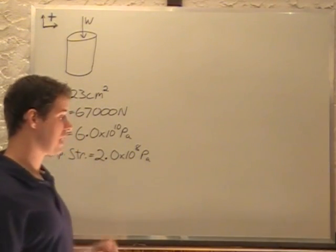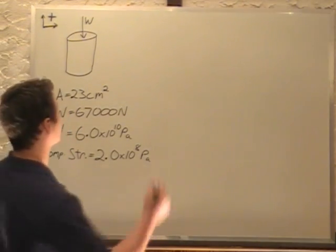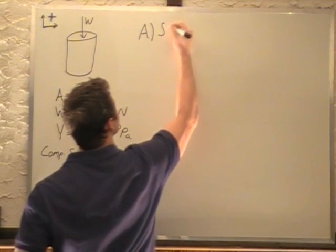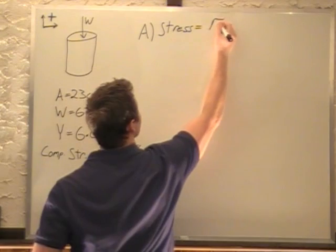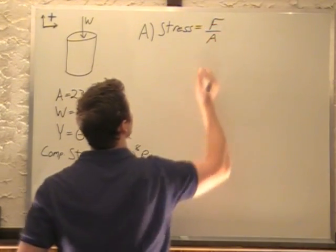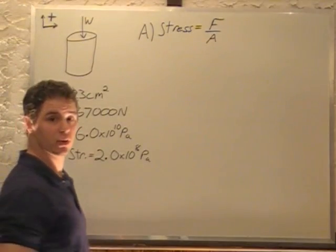So what we're asked for first, part A, is what is the stress in the column? Stress is equal to force divided by area. So the force pushing down on the column divided by the area that it's dispersed over. That's the stress.